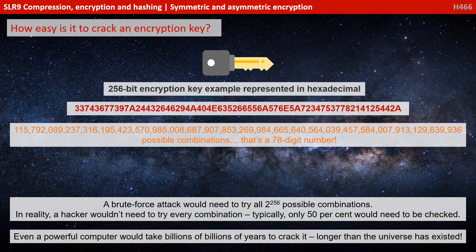So what actually is an encryption key, and how easy could they be to crack? Although we've been talking in abstract terms of a physical key, what they actually are is literally a sequence of alphanumeric characters. A popular current standard at the time of making this video was the 256-bit encryption key, and there's an actual example of it represented in hexadecimal — it's literally a string of alphanumeric characters. With a 256-bit encryption key, there are that many possible combinations — a 78-digit number.